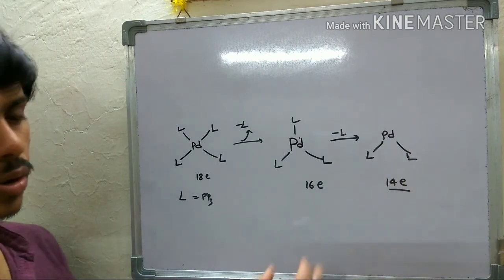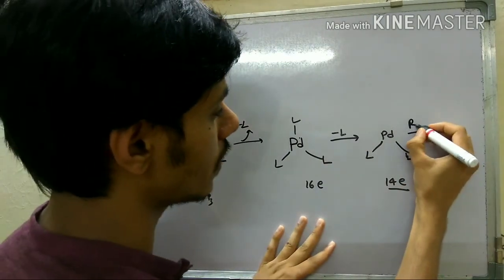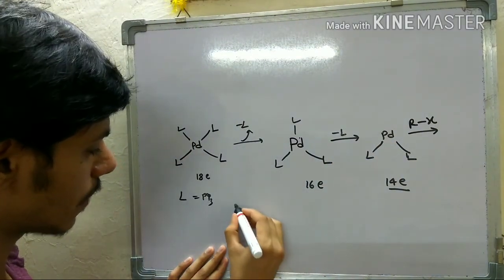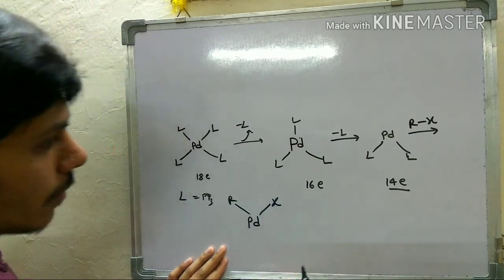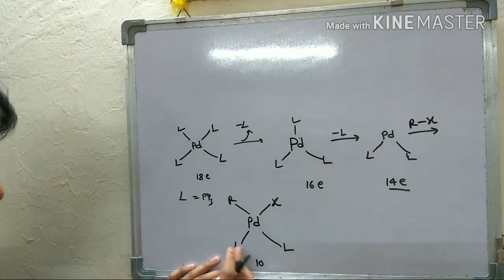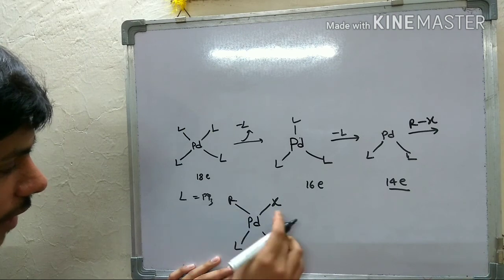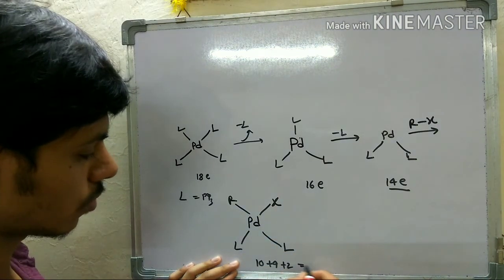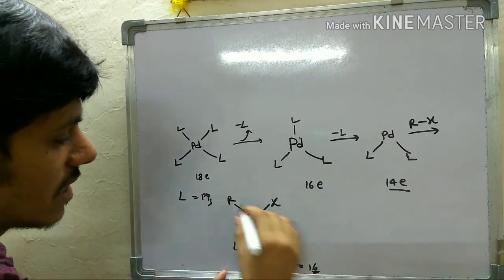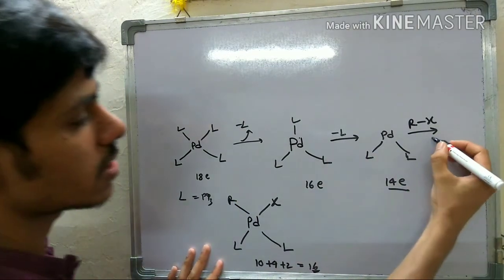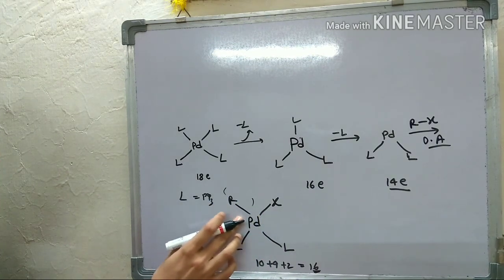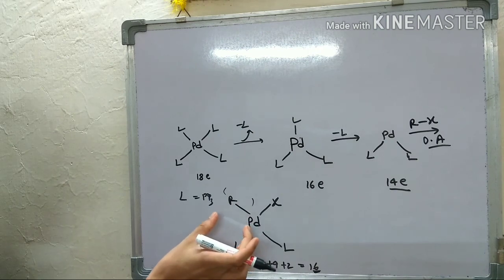For example, if you have RX in the medium and the 14-electron Pd(0) undergoes oxidative addition, you get a complex with palladium, R, X, and two L ligands. Counting electrons: palladium contributes 10, two L ligands contribute 4, and R and X each contribute 1 for a total of 2, giving 16 electrons. So this is a stable 16-electron complex — this step is oxidative addition.